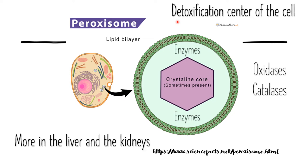The major organ of detoxification is the liver, so the cells in the liver contain a lot of peroxisomes. The kidneys also have a greater role in detoxification, so they too have a lot of peroxisomes. Apart from this, other cells also have peroxisomes, but the quantity is more in the organs of detoxification such as the liver and the kidneys.